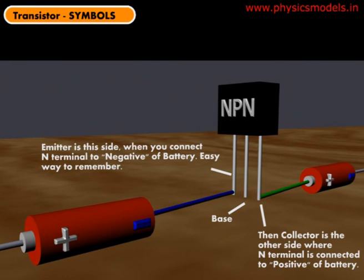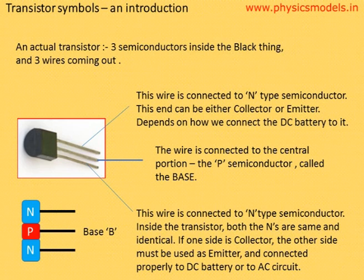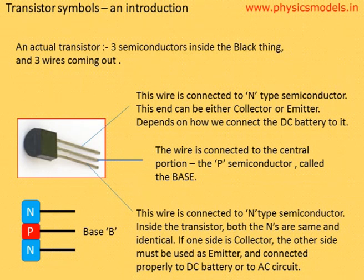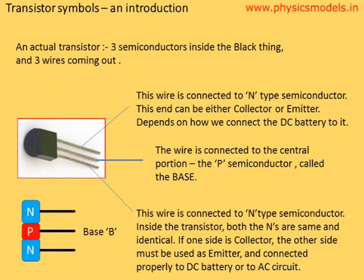Now we look at a 2D representation. In 2D you have one N, one P, and another N with their wires coming out. As I said previously, any one of those ends can be an emitter or a collector — it depends on how we connect it to the batteries.